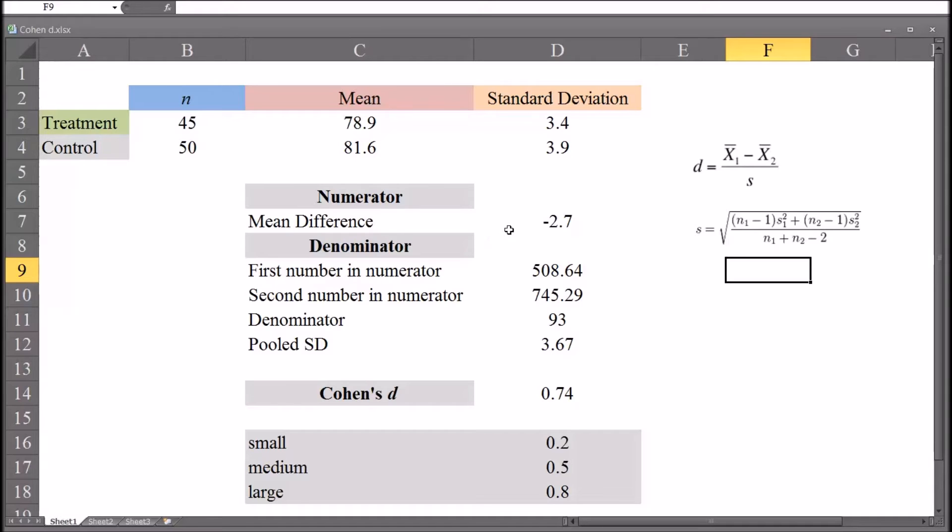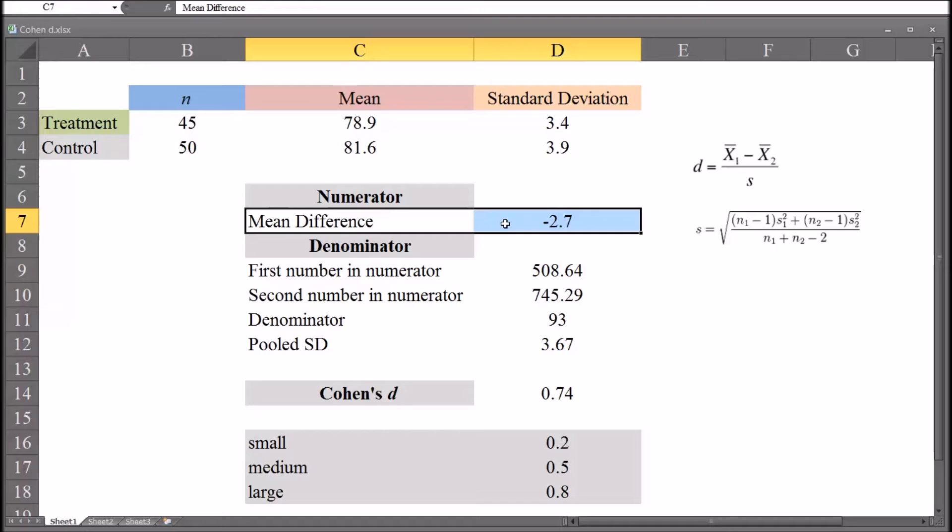First let's take a look at the numerator. It's relatively easy to calculate as compared to the denominator. It is the mean difference. You can see in the formula up top C3 minus C4, which is the mean score of the treatment group minus the mean score of the control group. It's fairly straightforward. It's negative 2.7.